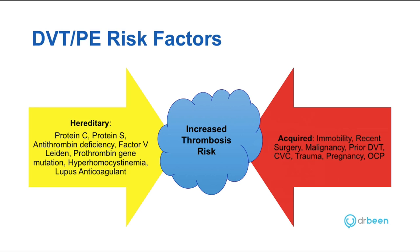Virchow stated that you need venous stasis, endothelial injury, and a hypercoagulable state. When looking at increased risk factors for thrombosis or a hypercoagulable state, factors can be either hereditary or acquired. We have endogenous anticoagulants including protein C, protein S, and antithrombin. Deficiencies in any of these three anticoagulants can lead to a prothrombotic or hypercoagulable state. Factor V Leiden is actually a resistance to protein C, resulting in the same hypercoagulable state. A gene mutation in prothrombin can also be prothrombotic. And elevated levels of homocysteine — hyperhomocystinemia — can also lead to a prothrombotic or hypercoagulable state.